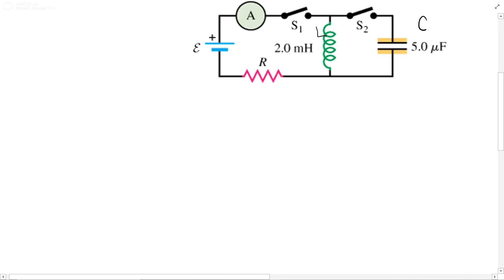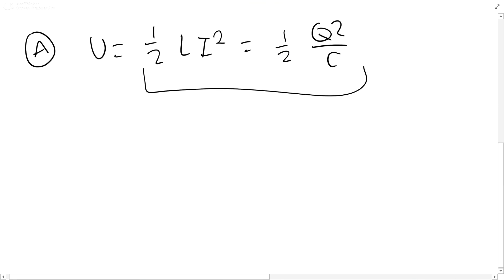First thing you got to do is find some equations that relate them. If you look at your potential energy, you get one-half LI squared equals one-half Q squared over C. So you can relate these two and get LI squared equals Q squared over C, and you're trying to find charge, which is Q.